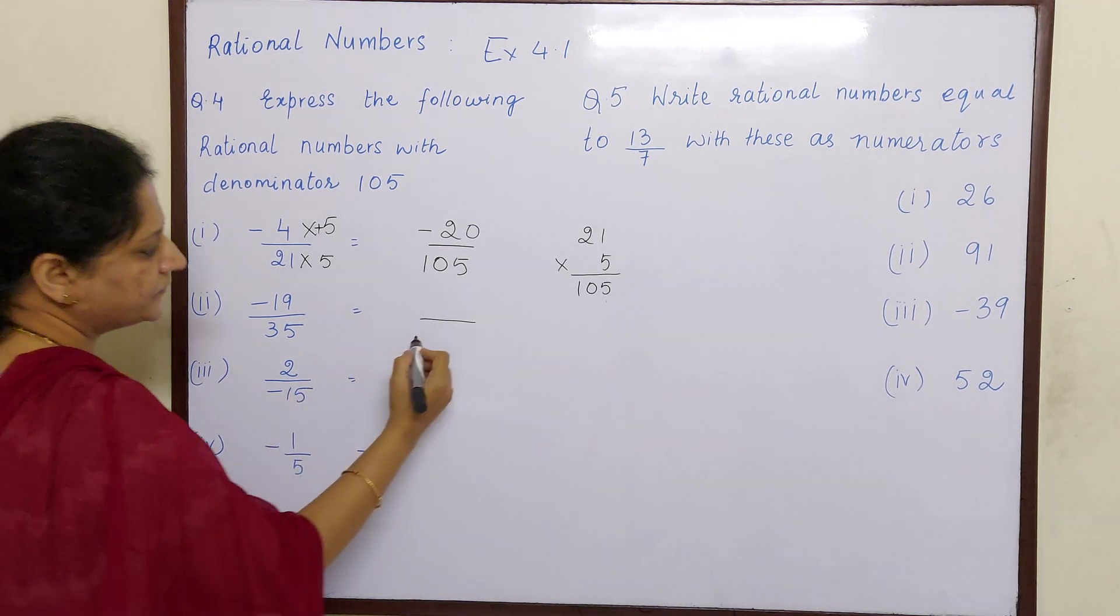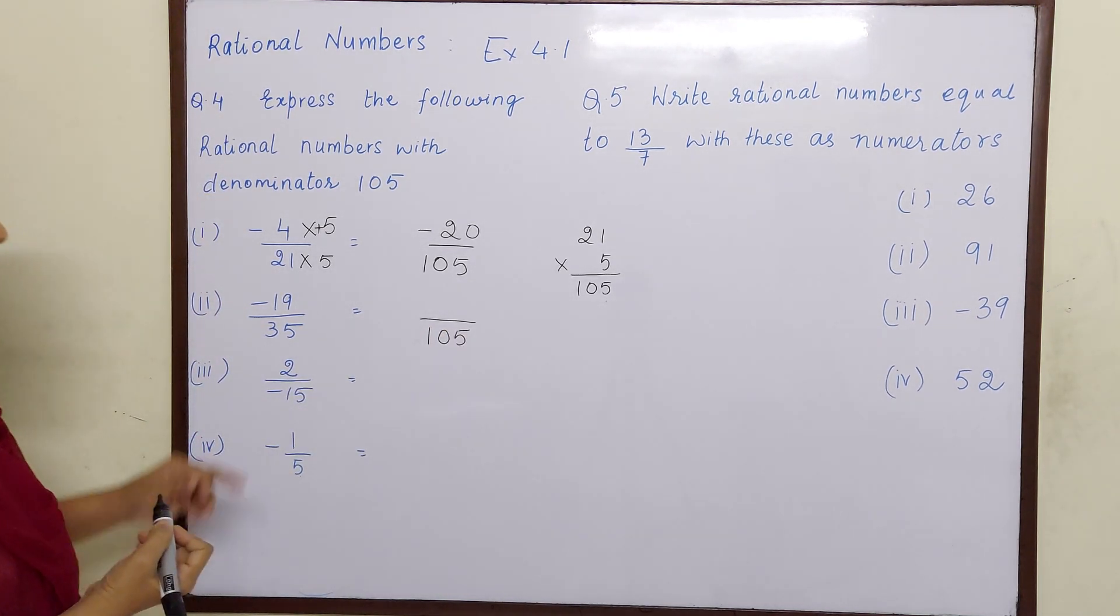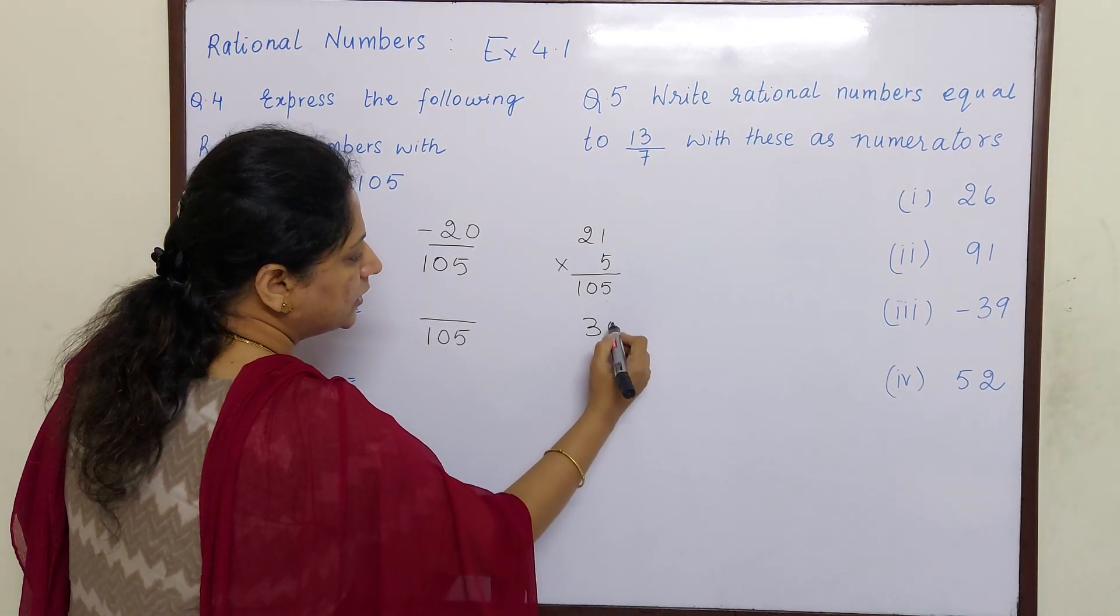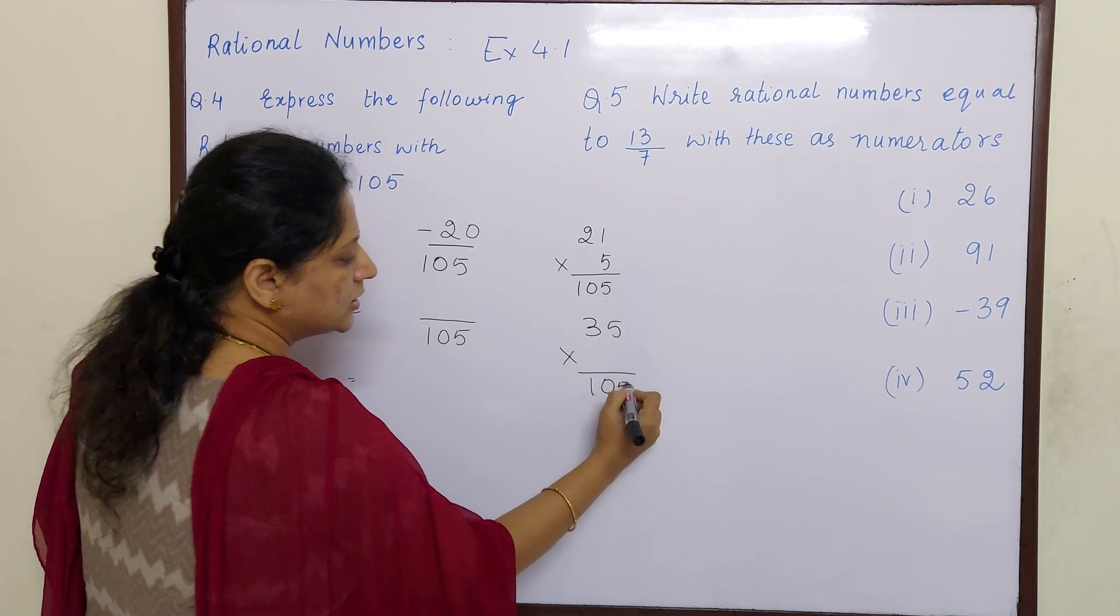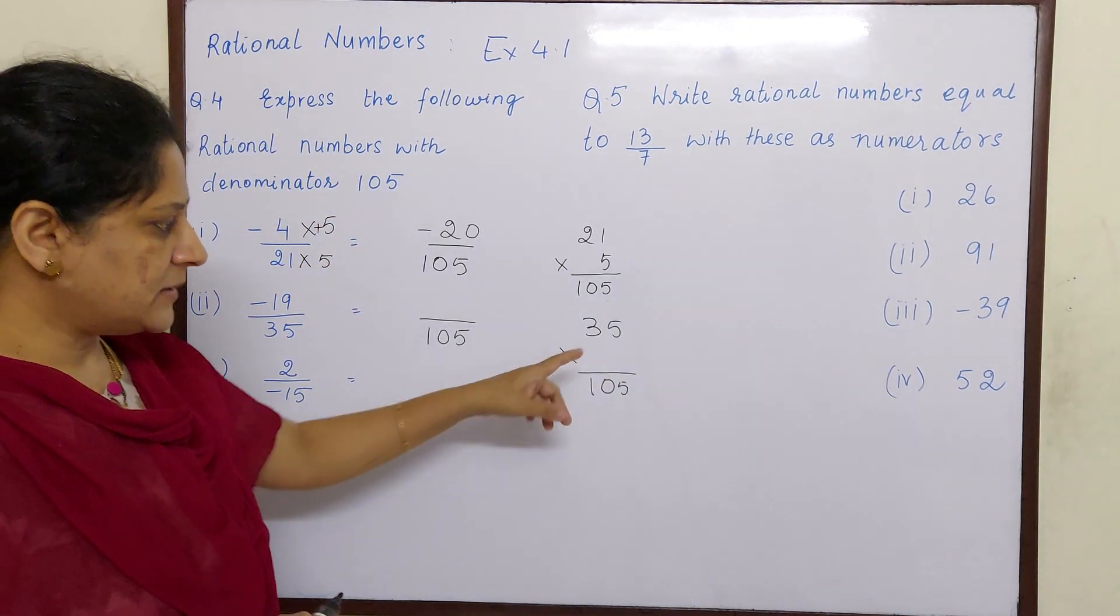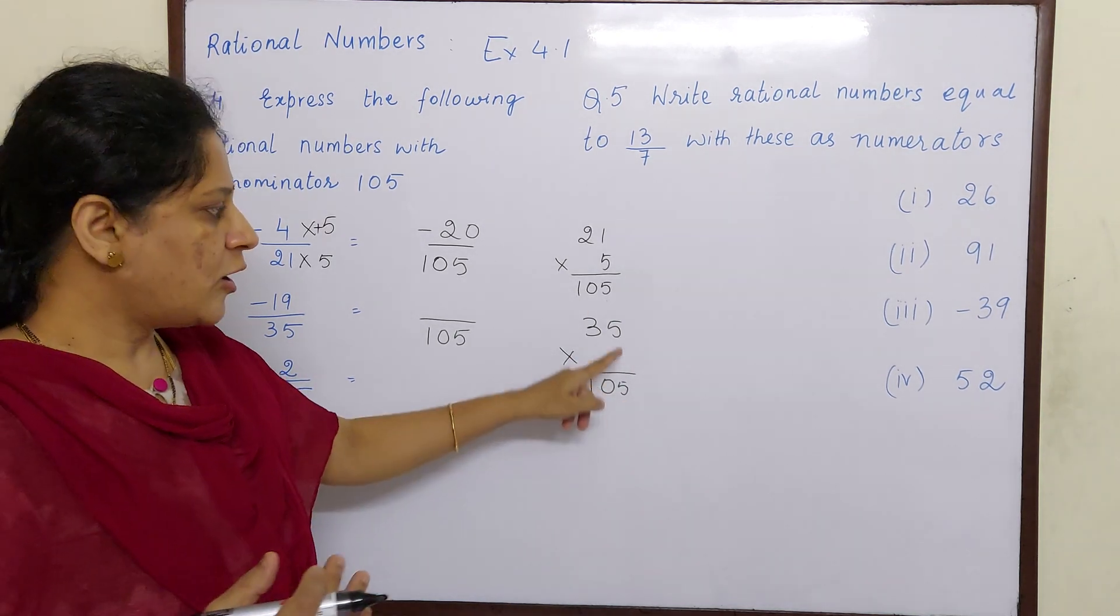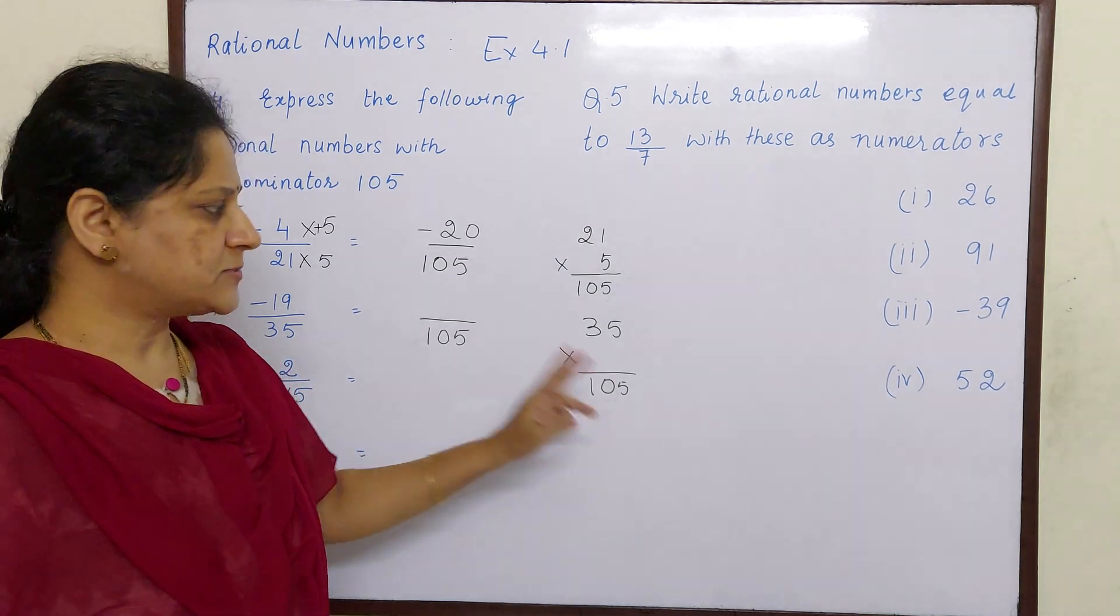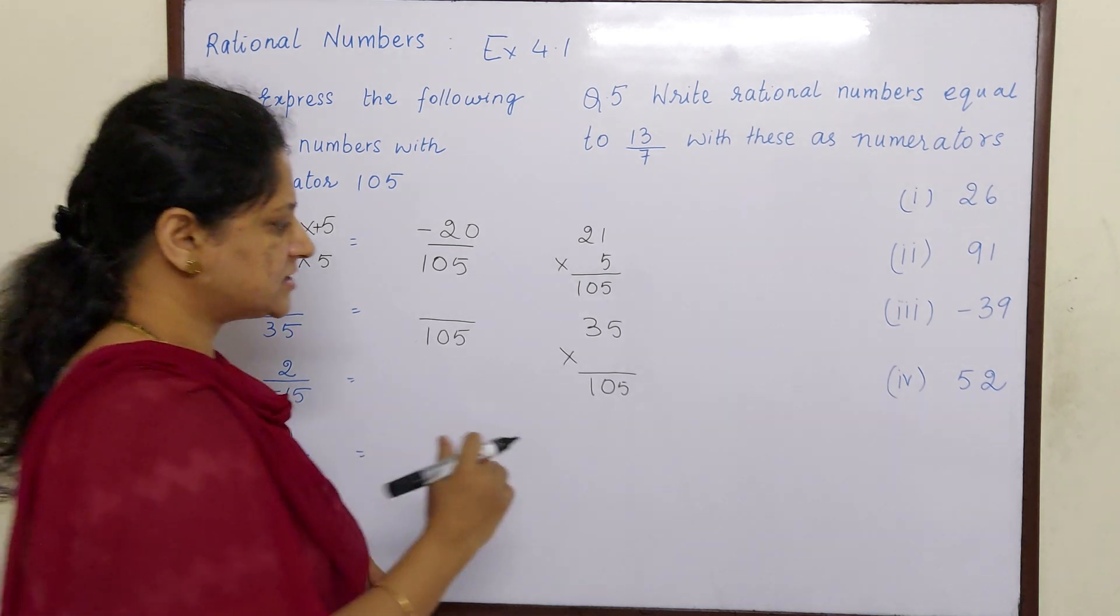Next sum, minus 19 by 35, now this also has to be changed into denominator 105. So now we have to think 35 into what will give you 105, right? So now there are only 2 options available, 3 fives are 15, in the ones place you will get 5, or 5 fives are 25, you will get 5 in the ones place. So we will multiply only these 2 numbers and see which fits well.